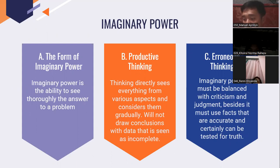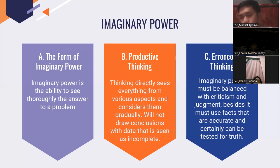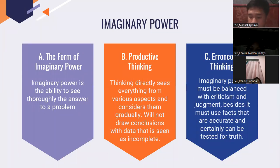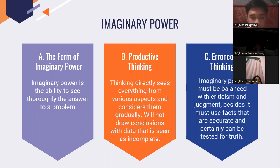Point B: productive thinking. Thinking directly sees everything from various aspects and considers them gradually. We will not draw conclusions with data that is seen as incomplete, because incomplete data will make research seem not strong in supporting theory, so it is easy to break the improvised theory. Point C: erroneous thinking. Imaginary power must be balanced with criticism and judgment. It must ask for facts that are accurate and can be tested for truth. The data is attempted not to be taken from Wikipedia or Blogspot, but rather from accredited journals or related books.